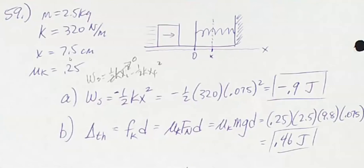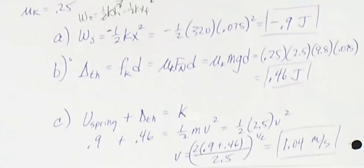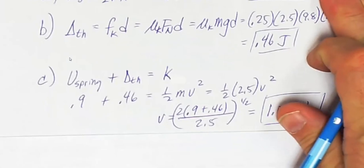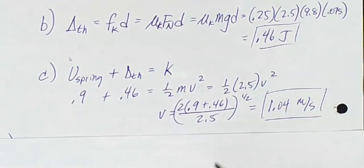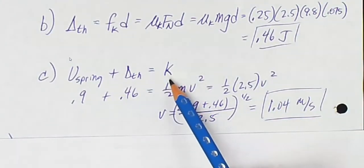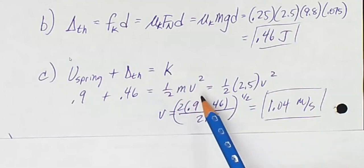Part C. What was the speed of the block just before it hit the spring? Well, just before it hits the spring, it has some kinetic energy, which is one-half mv squared. That's what I'm looking for, the velocity.